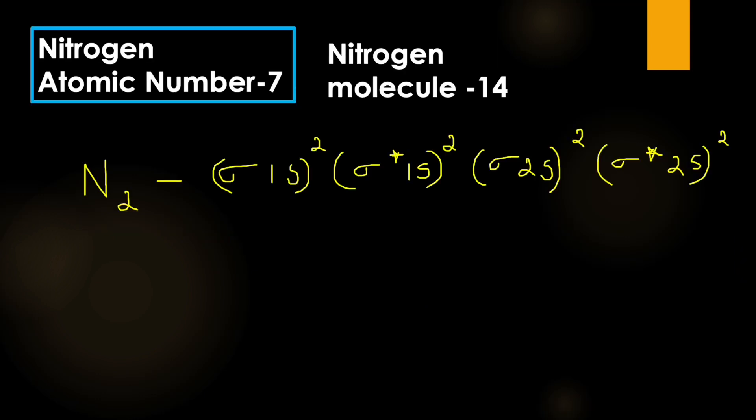Atomic nitrogen, atomic number is 7. When it forms a molecule, then the total number of electrons present in a nitrogen molecule is 14.